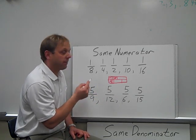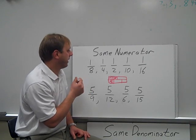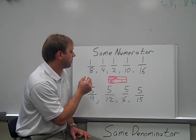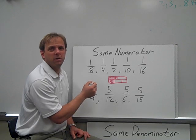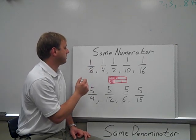And once I do that, then I can write my rule down that the larger the denominator, the smaller the piece when the numerators are the same.